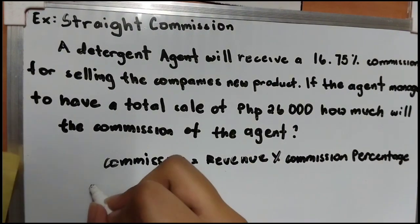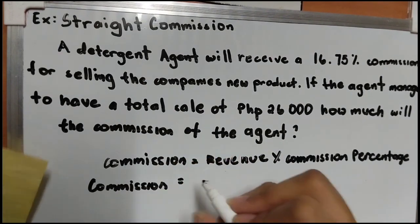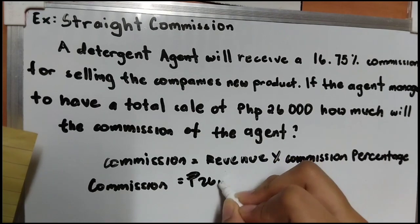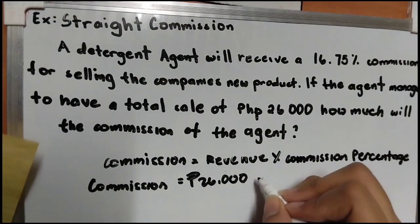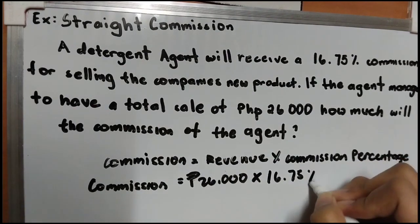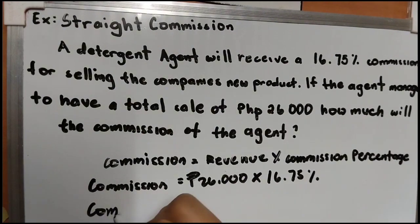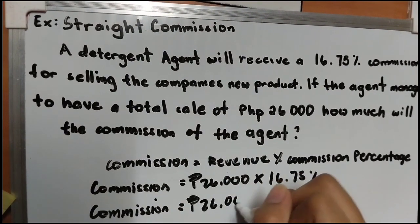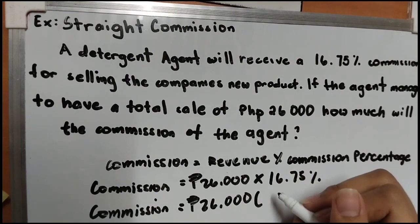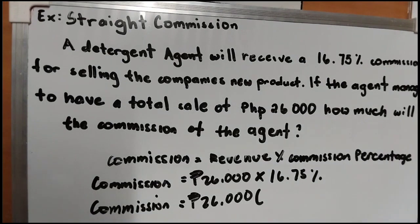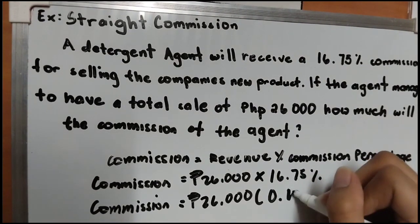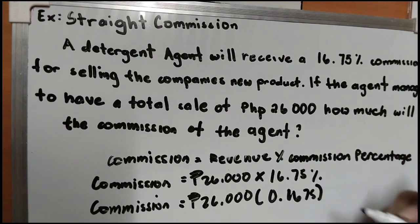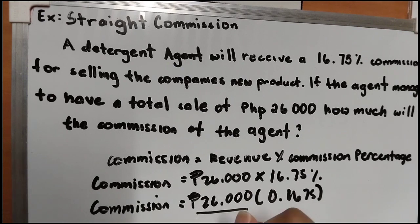I-solve natin yung given. Yung revenue natin is P26,000. Tapos yung commission percentage natin is 16.75%. I-convert lang natin yung 16.75 sa decimal bago natin sya ipag-times. 26,000 times 16.75 divided by 100 equals 0.1675. So, 26,000 times 0.1675 is equals to P4,355.